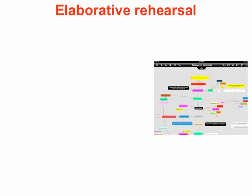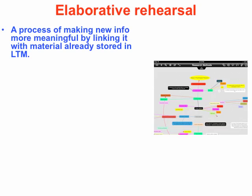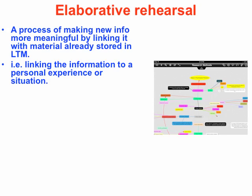We use elaborative rehearsal when we want to have a deep encoding of information that we can store in the passive LTM system and then retrieve that information later on when we need it. We do this by linking incoming content with material that's already in our long-term memory, and we call this semantic encoding — we're taking incoming content and linking it to existing information already in our LTM, and thus we're personalizing our learning.